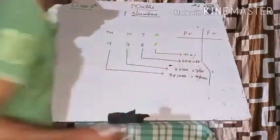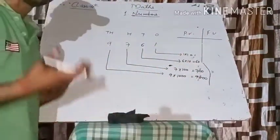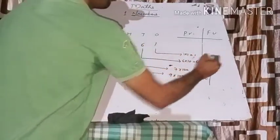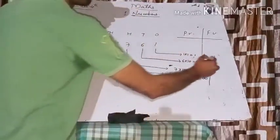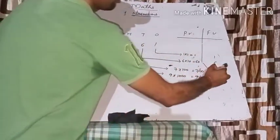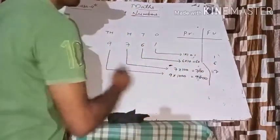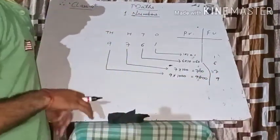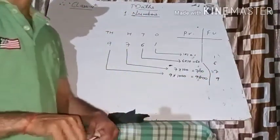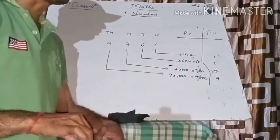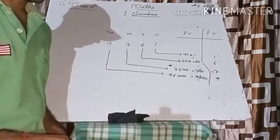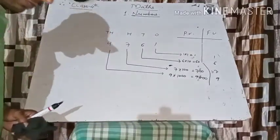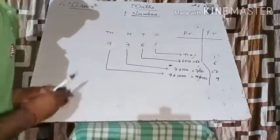Now, what is the face value of any number? The face value of any number is the number itself. So the face value of 1 is 1, face value of 6 is 6, face value of 7 is 7, and face value of 9 is 9. Now you understand what is place value and what is face value.